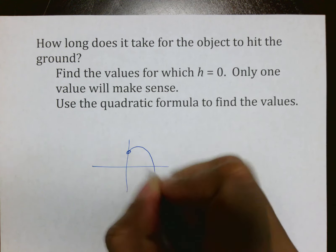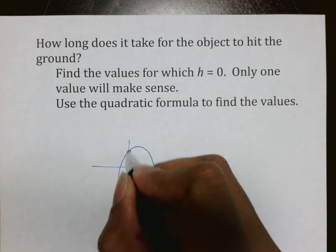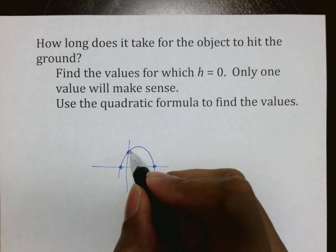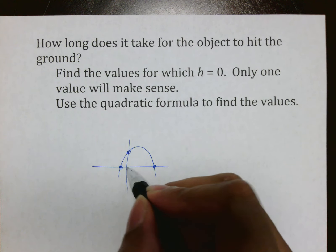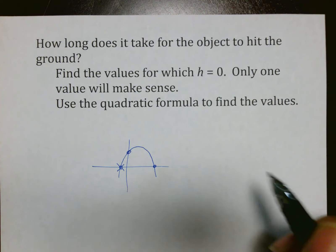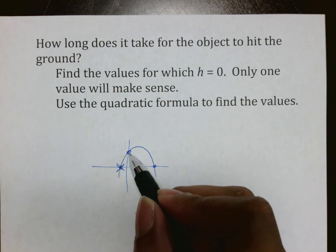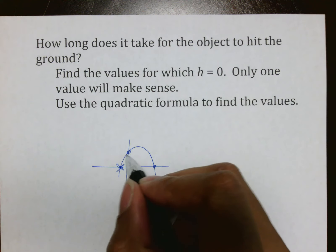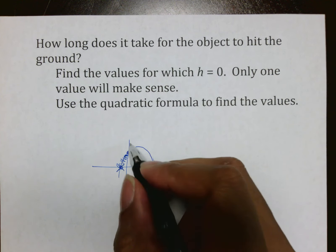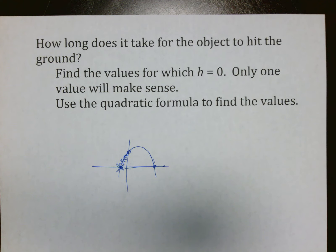And then the last question it asks is how long does it take for the object to hit the ground? And this is again where people get lost. If the object did this and the parabola does this, the value of h equals zero, which of course is the height, is going to have two different spots. One of them is going to be after you threw it, and one of them is going to be before you threw it, which means time machine going backwards is not going to make sense. Typically, you do not want the negative.